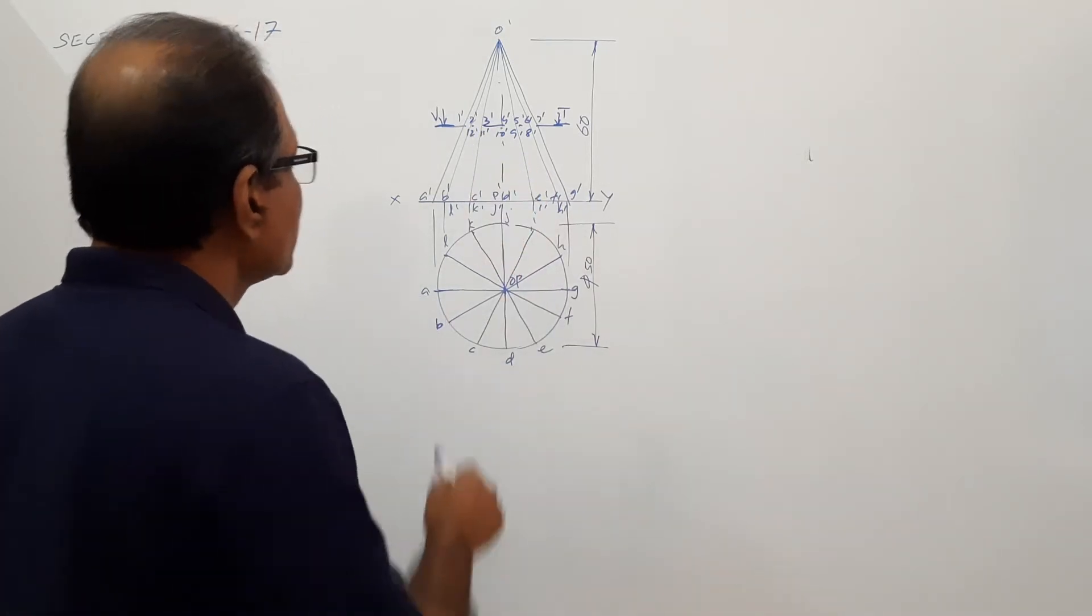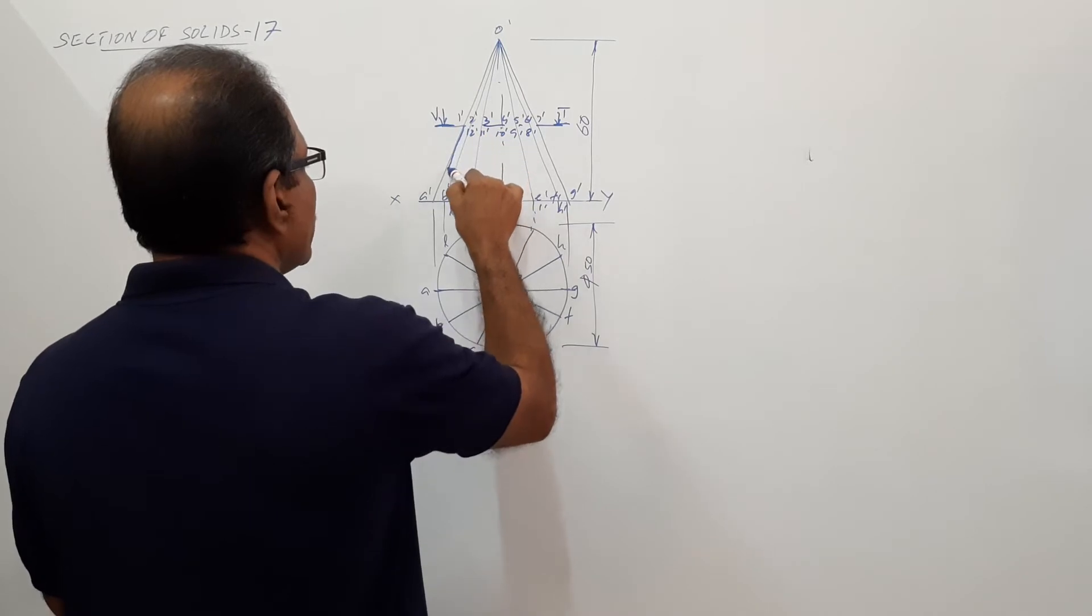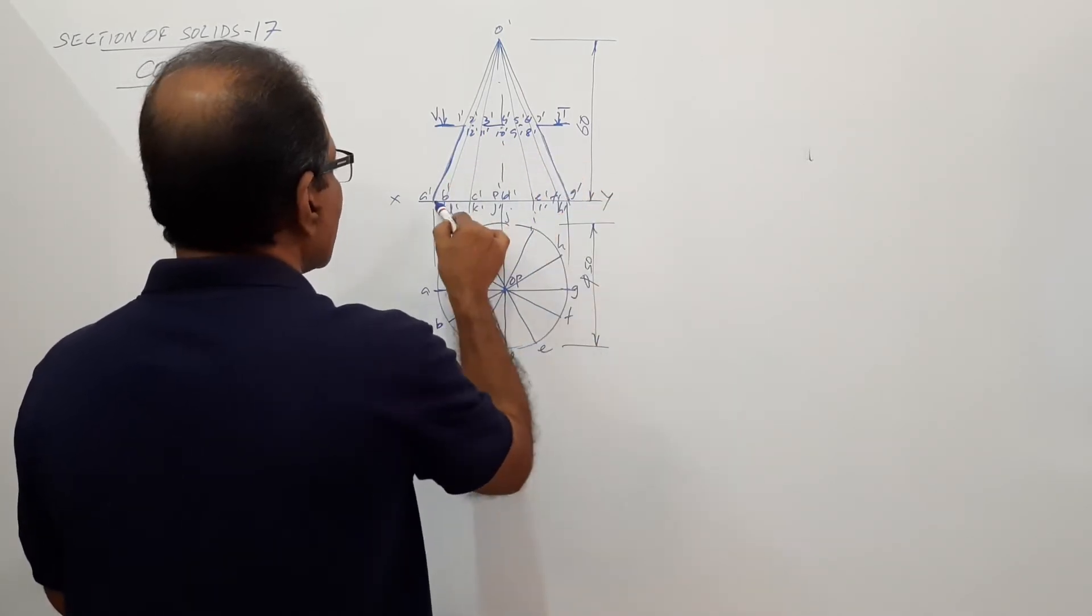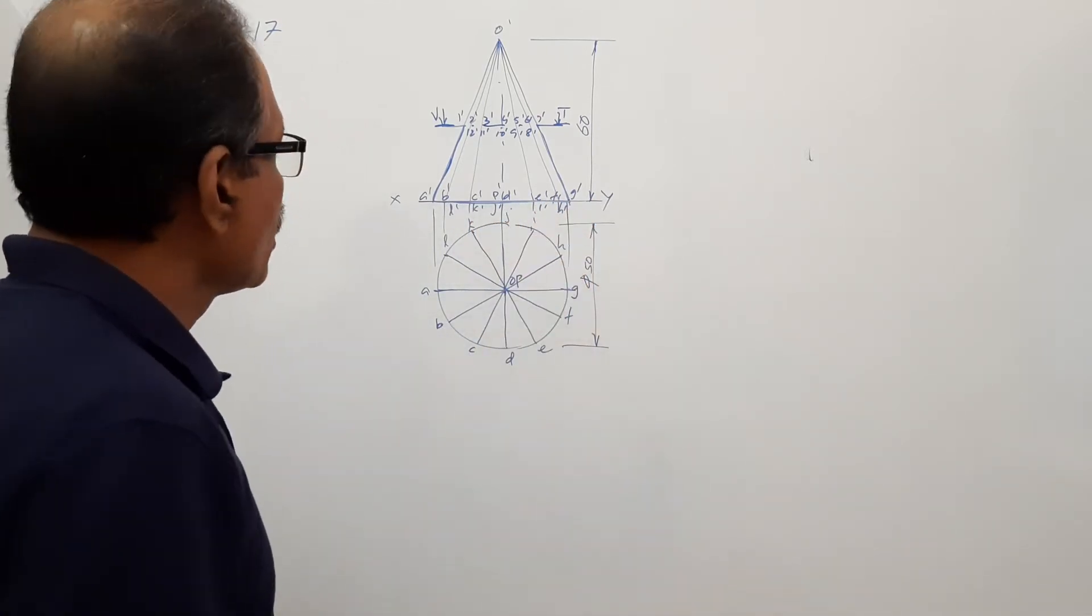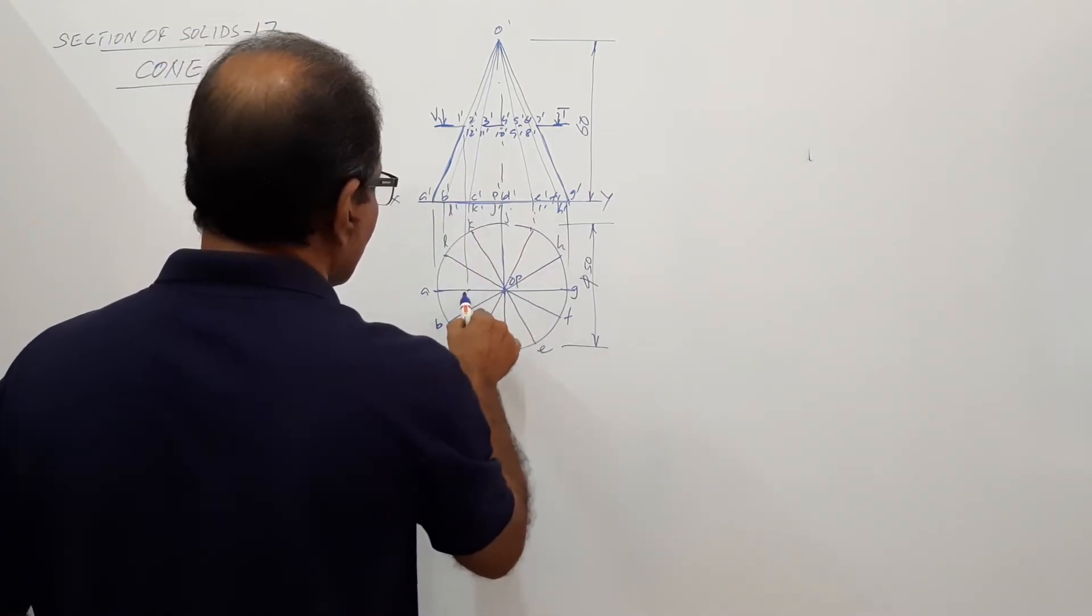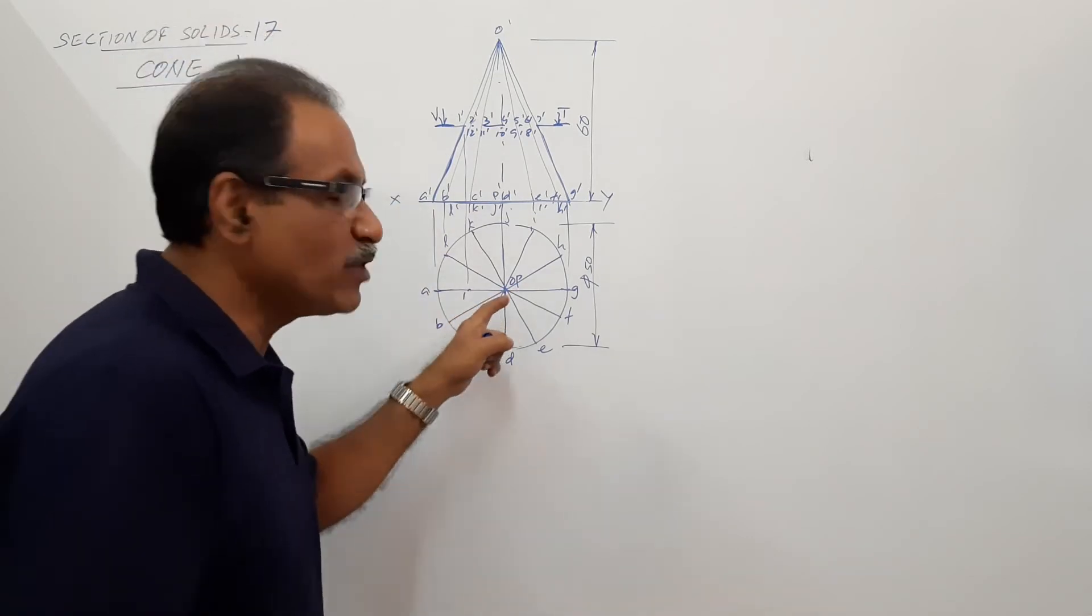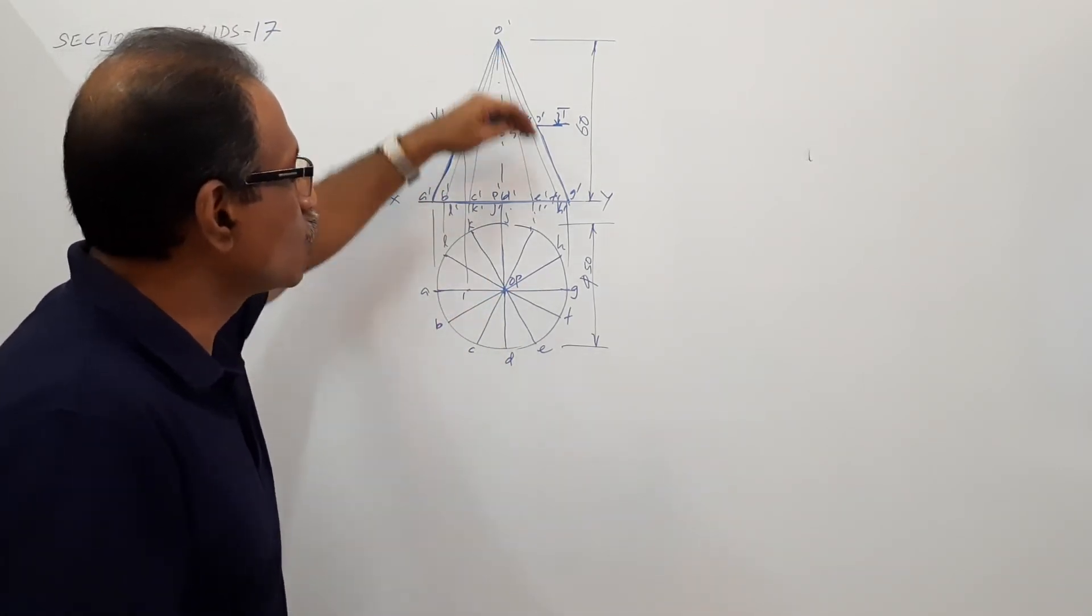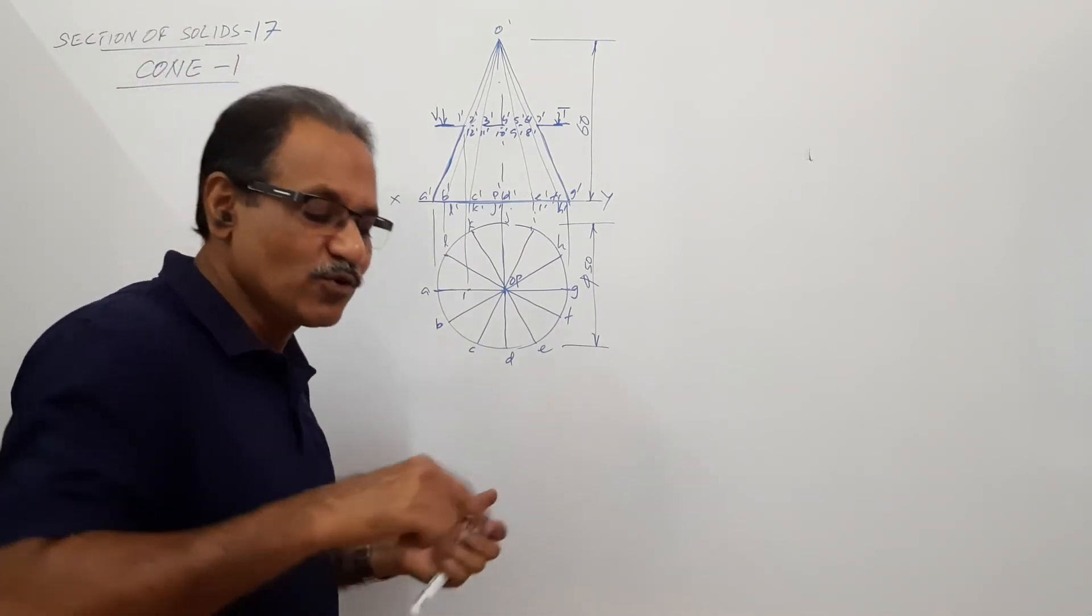What you darken? You will darken the portion that is remaining. One dash, when dropped down to the plan will give you one. One dash is on OA, so one will be on OA. Similarly you can drop down all points, and when you connect them, you will get the circle.